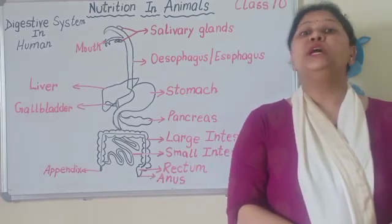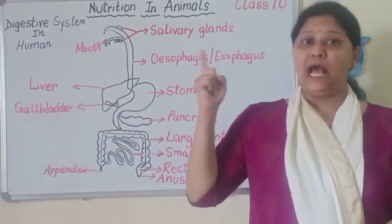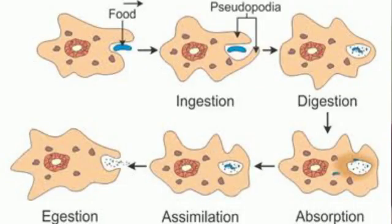Now we will see the nutrition in amoeba. You can see the structure — the finger-like projections on the surface are temporary structures that hold the food. You can see in the picture that the surface of the amoeba engulfs food particles using these projections.